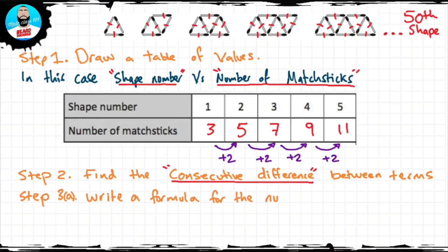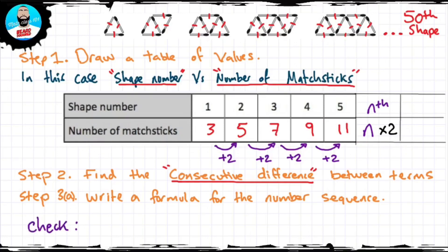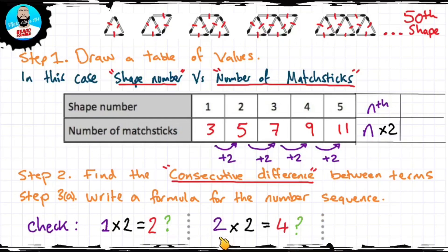Now we're going to try to write a formula for the number sequence. For the nth term, instead of adding 2 each time — for example, for the fourth term we do the first term plus 2, plus 2, plus 2 — we're always doing this multiple of 2, so instead of adding the 2s we multiply by 2. Let's check if this actually works. If I take the first term and multiply it by 2, I get 2 — that's a problem because my answer isn't 2. 2 times 2 gives me 4, but I don't want 4. And 3 times 2 gives me 6, but I want 7.